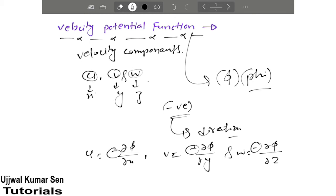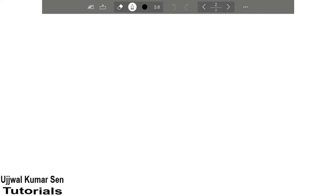So we are having three velocity components and three directions. Now let's move on. We know the continuity equation for incompressible steady flow.